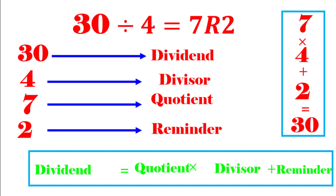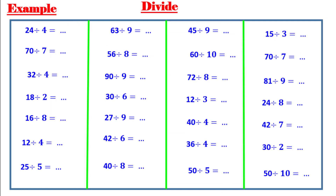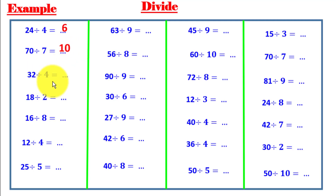Now let's revise the multiplication table. 24 divided by 4 equals what? What number times 4 equals 24? That number is 6. 70 divided by 7 equals what? That number is 10. 32 divided by 4 — what number times 4 equals 32? That number is 8.